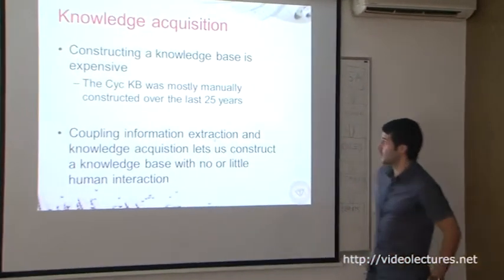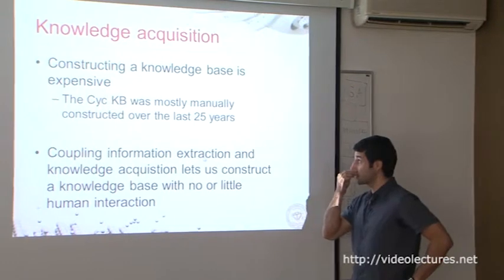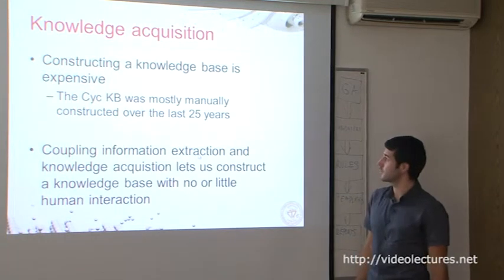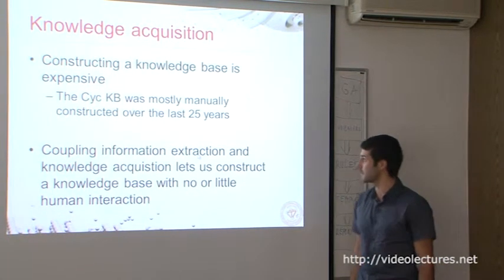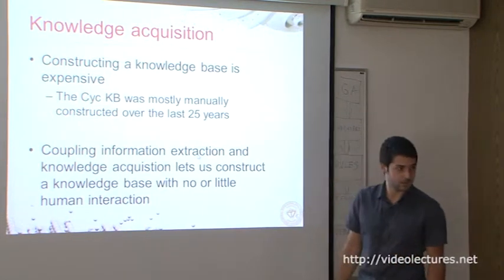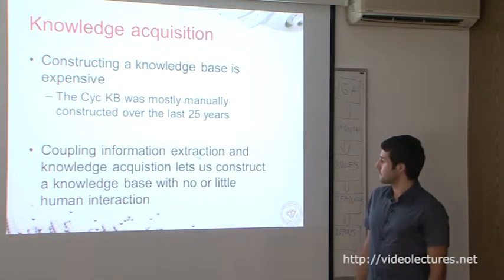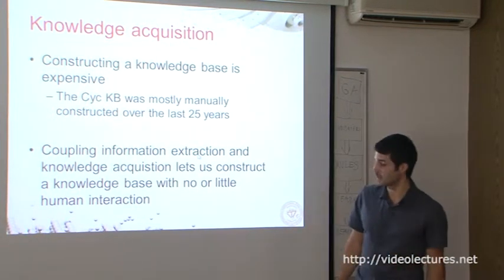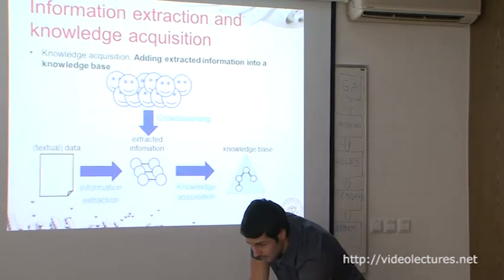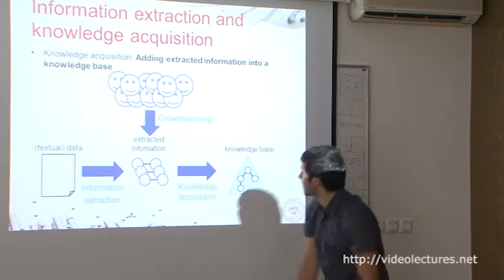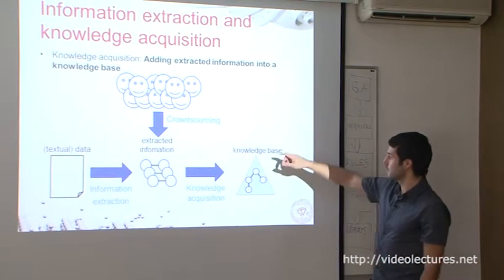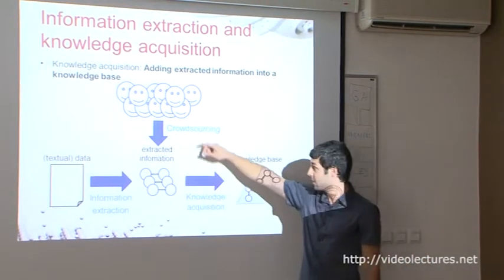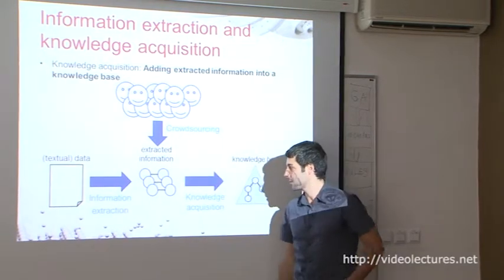Knowledge acquisition — constructing knowledge bases — can be quite hard. The SAIK knowledge base, for example, took more than 25 years to build, and it's still not at the level everybody wanted. With knowledge acquisition it can be a bit faster if done properly. Basically the acquisition can be done — but before acquisition there is information retrieval or information extraction, which can be done from multiple sources. We somehow construct smaller bits of knowledge, like triples, and then process them into the actual knowledge base.